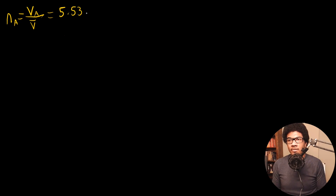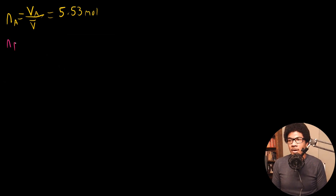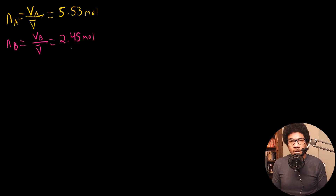To get the number of moles of water we add: nA equals the volume of A divided by the molar volume of pure water. Using 100 milliliters and the molar volume of 18.07, we get 5.53 moles of water. For the methanol, the same calculation — taking the volume of B divided by the molar volume of methanol — gives us 2.45 moles. So these are the number of moles of each of our components.